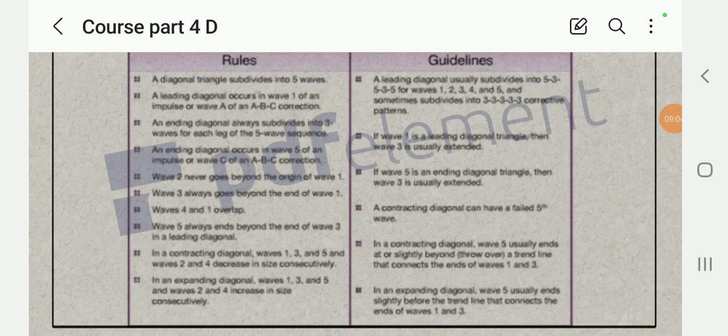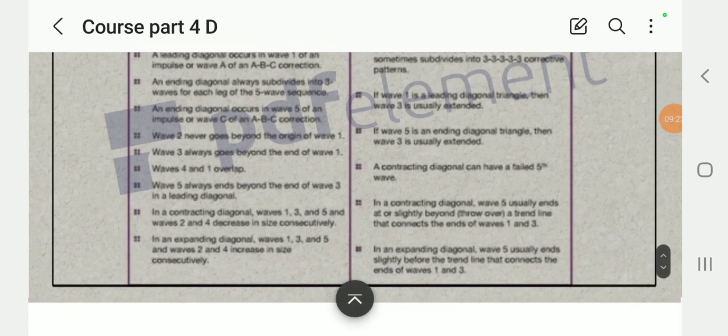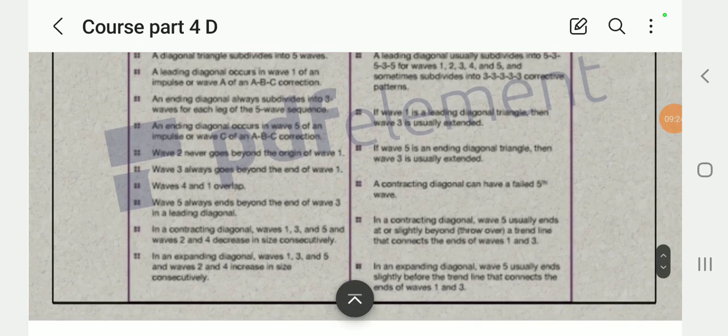If wave one is a leading diagonal triangle, then wave three is usually extended. If wave five is an ending diagonal triangle, then wave three is usually extended. A contracting diagonal can have a failed fifth wave. In a contracting diagonal, wave five usually ends at or slightly beyond—throw over—a trend line that connects the ends of wave one and three.